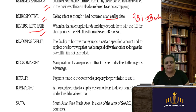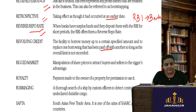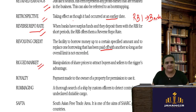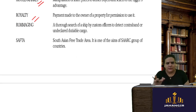Revolving credit is a facility to borrow money up to a specified amount and replace one borrowing that has been paid off with another, as long as the overall limit is not exceeded — the credit keeps revolving from one business to another. A rigged market involves manipulation of share prices. Royalty is a payment made to the owner or to authors for the use of their work.